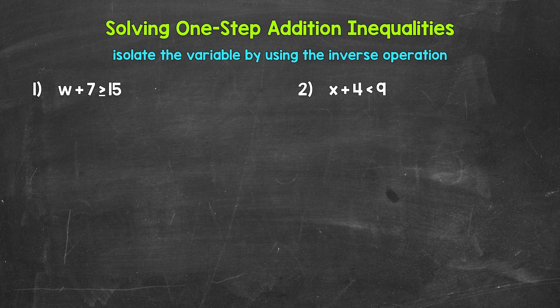So this is just like when we solve equations. Let's jump into number one, where we have w plus seven is greater than or equal to 15. So we need to solve this — we need to isolate that variable of w. Now we are adding seven to w, so we need the inverse operation of addition. The inverse operation of addition is subtraction.